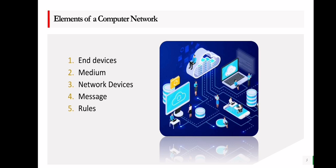The first element is the end devices. End devices communicate with one another and exchange knowledge or resources in a computer network. A computer, a server, or a mobile phone are examples of end devices. These end devices are typically used for computer network users.